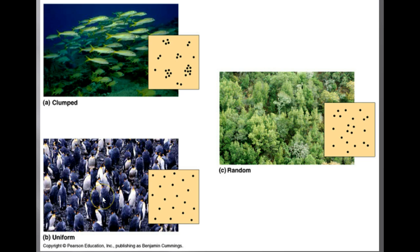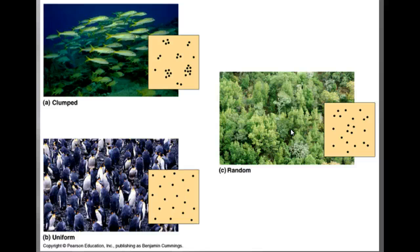Uniform dispersion is where individuals are evenly distributed and may be influenced by social interactions such as territoriality. Get that in your notes. Random dispersion is where the position of each individual is independent of other individuals, and it occurs in the absence of strong attractions or repulsions. Get those in your notes.